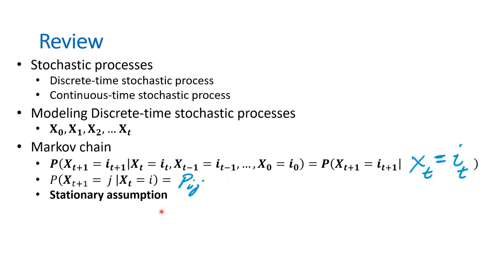The stationary assumption tells us that these transition probabilities do not change over time. For example, in the gambling game, the probability of winning is always p — it doesn't change after a certain number of games. Although in practice it may not be true — for example, the more I play, the more I develop my skill and the more likely I am to win.